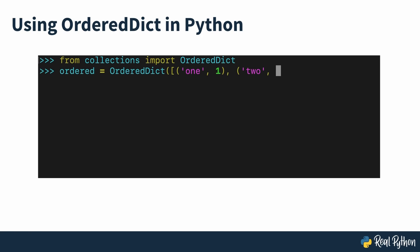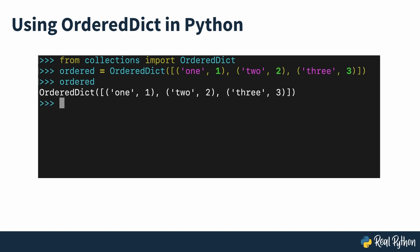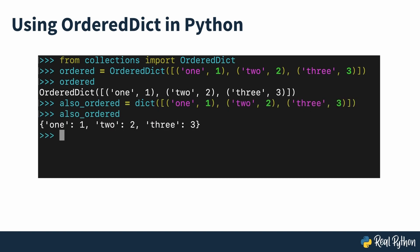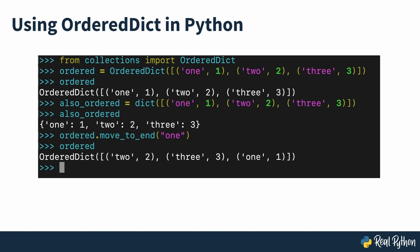It's a dictionary subclass specifically designed to remember the order of items, which is defined by the insertion order of keys. But this changed in Python 3.6. The built-in dictionary class now keeps its items ordered as well. Because of that, many in the Python community now wonder if OrderDict is still useful. A closer look at the class will uncover that it still provides valuable features.